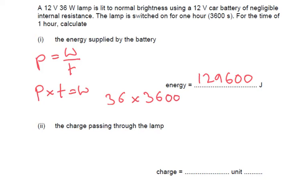The charge passing through the lamp. So Q equals IT and P equals IV. So to find the current we're going to do P over V. So that is 36 divided by 12 which is 3. So that's our current.